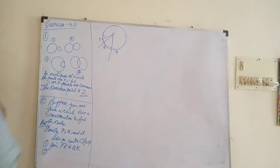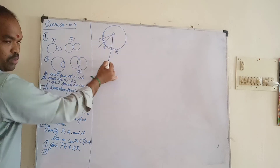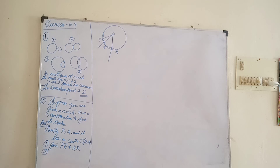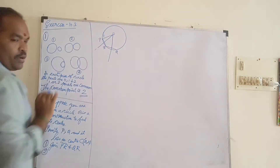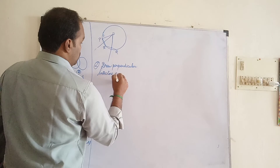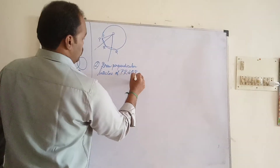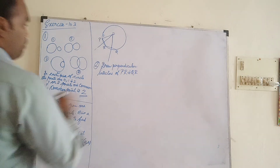Draw the perpendicular bisectors of PR and QR. For PR this is perpendicular, and for QR this is perpendicular. So the second step is: draw perpendicular bisectors of PR and QR respectively.